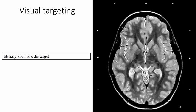If we are performing visual anatomical targeting, we simply identify and mark the target. When we have identified the target, the next step is to calculate the coordinates.